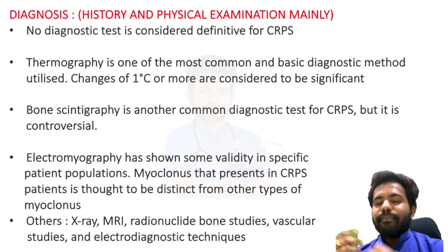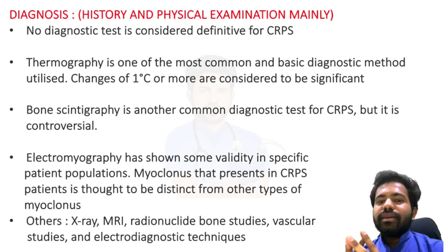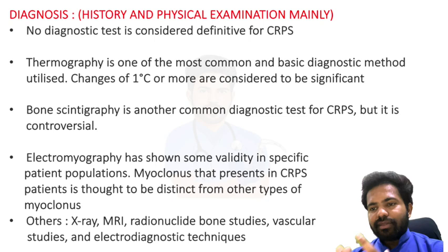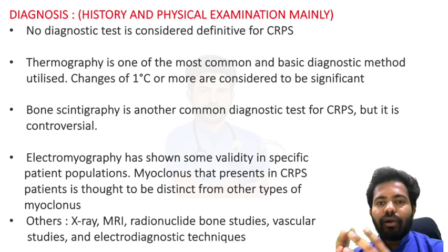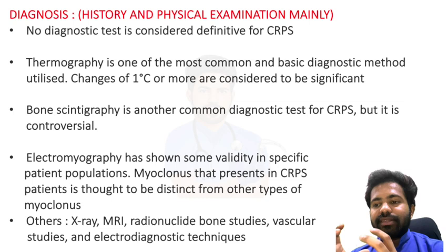However, several tests are used: thermography is one of the common basic diagnostic methods to measure temperature of the affected limb — changes of more than one degree centigrade are considered significant. Other tests include bone scintigraphy, MRI, radionuclide bone scans, vascular studies, electrodiagnostic techniques, and electromyography studies, which are useful because the myoclonus in CRPS patients is thought to be distinct from myoclonus caused by other diseases.